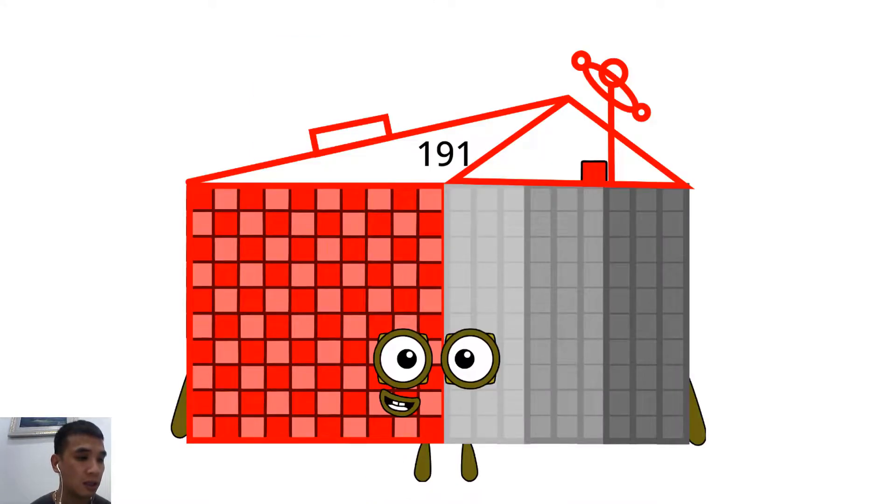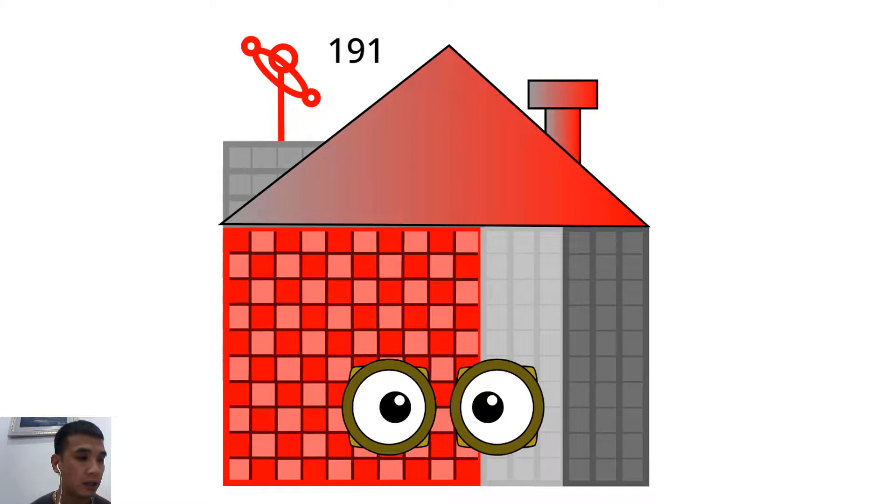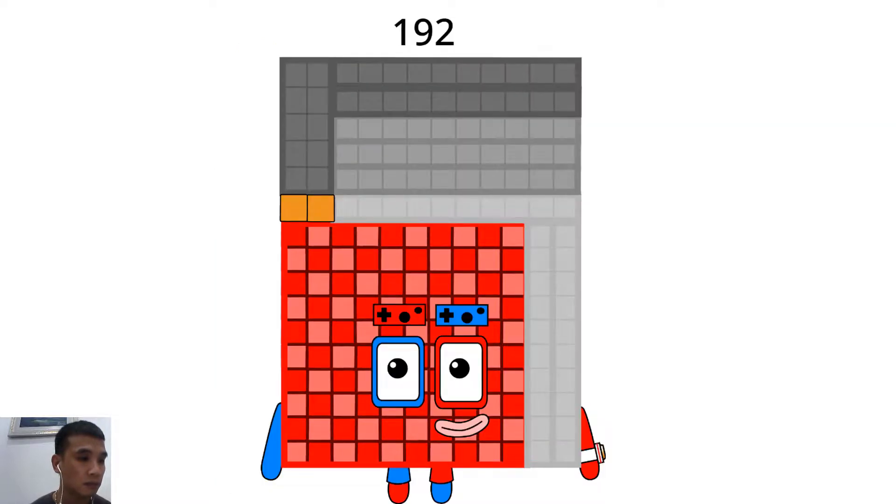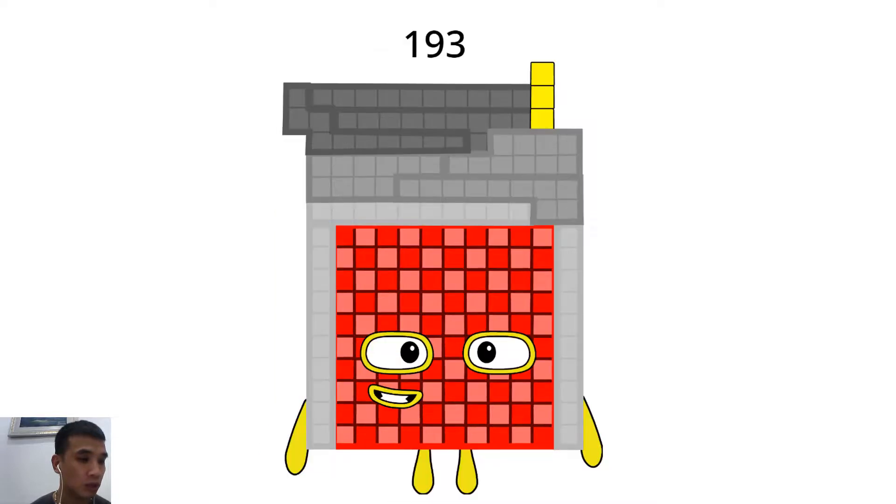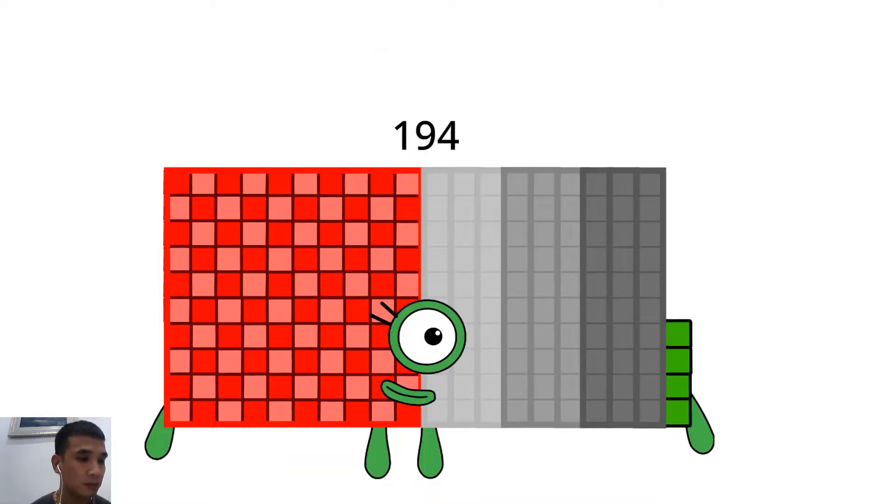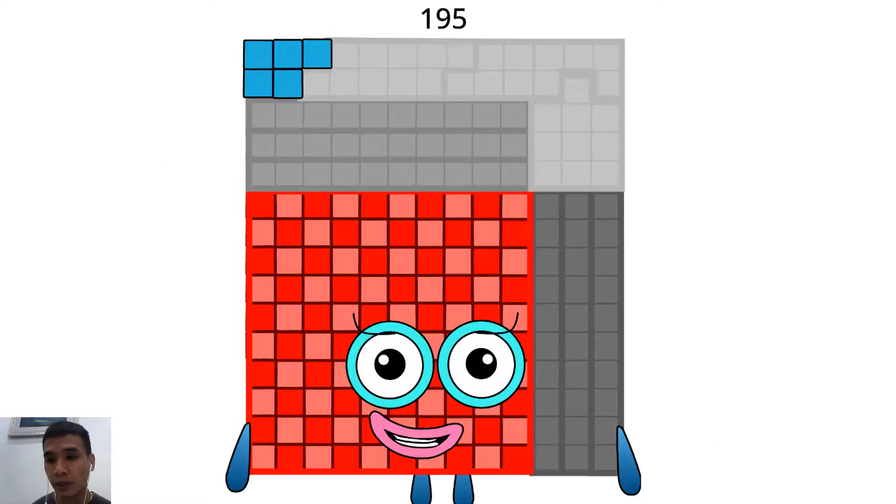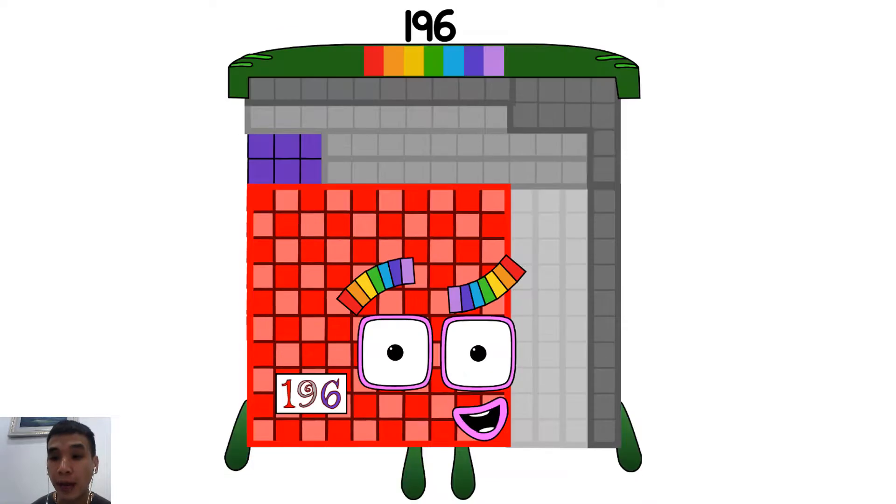191. I like a house. 192. I am a rectangle, 12 times 16. 193. I am 193. 194. I am double 97. 195. I am unlucky. 196. I am built to skate dot com. I am a 14 times 14 square.